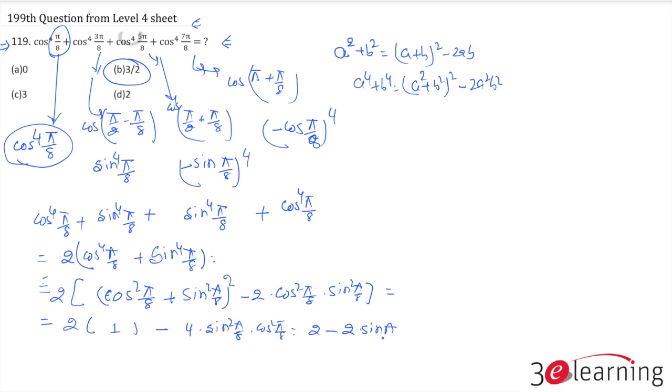So we have 2 minus this is nothing but 2 minus (2·sin θ·cos θ)² squared. Finally we have nothing but 2 - (sin 2θ)² since 2·sin θ·cos θ is sin 2θ. This one is π/8 so this becomes π/4. Sin(π/4) is 1/√2 and squared. This is nothing but 2 - 1/2, and finally we have 3/2 is the answer.